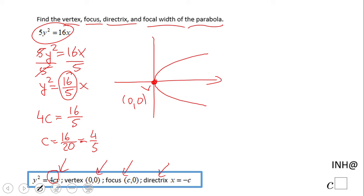The focus is gonna be 4 fifth units inside. This is c. The focus will be 4 over 5 and 0. And the directrix will be 4 over 5 units to the left. This line which is going to be x equals negative 4 over 5.